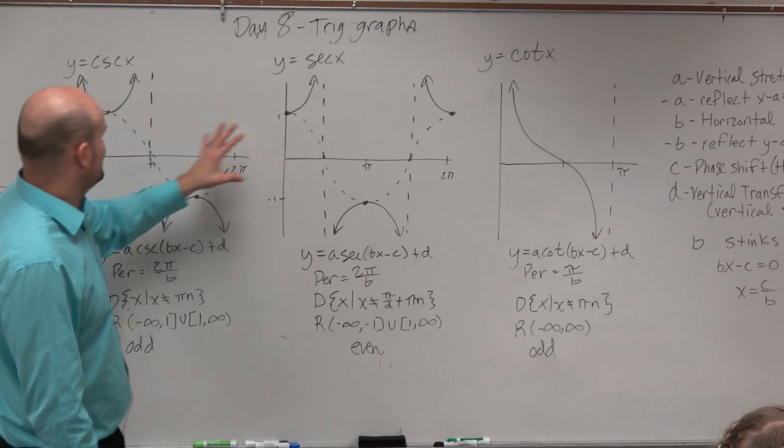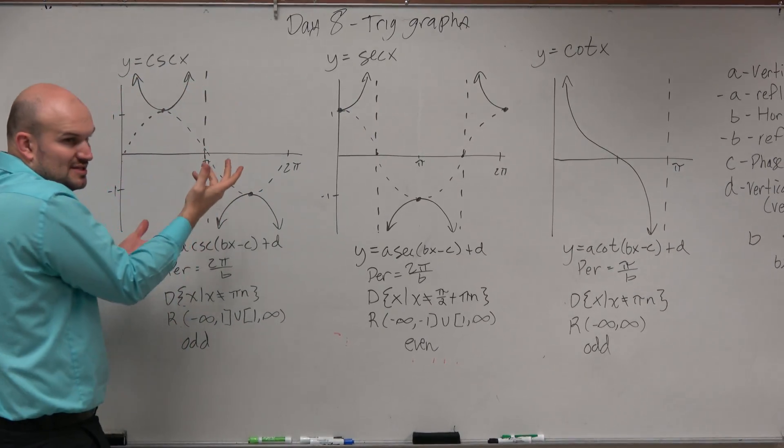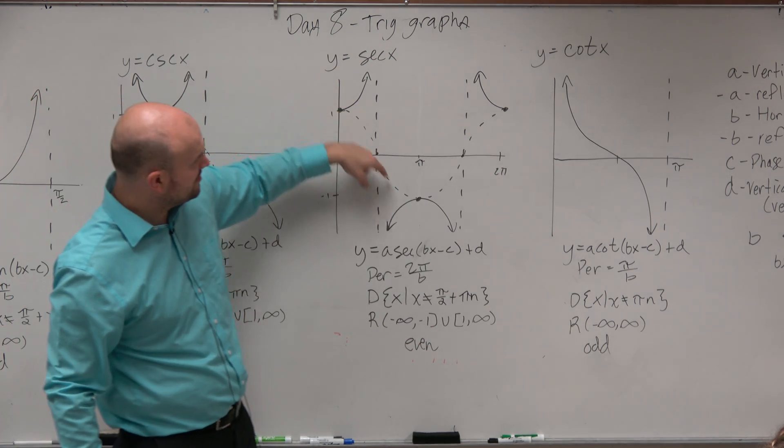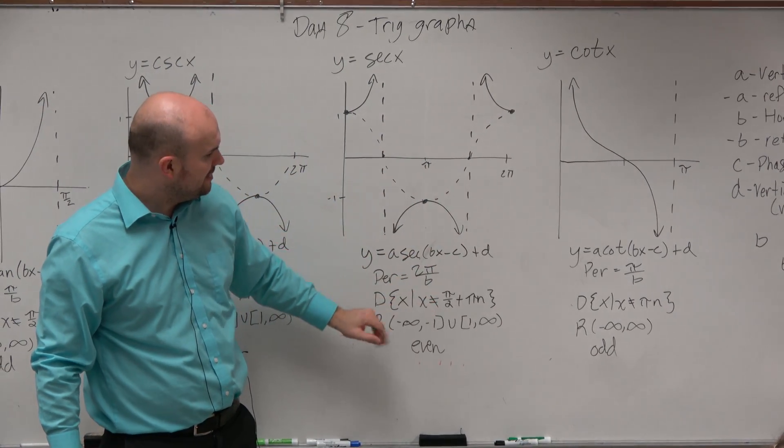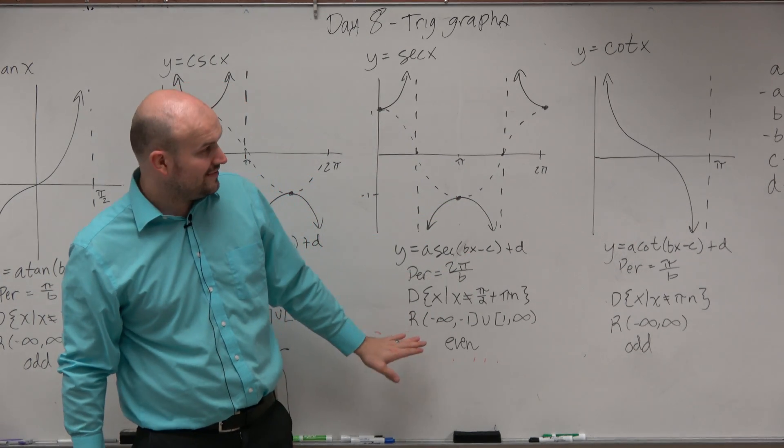Secant is really the exact same thing. And again, secant, if you just shifted secant over, you would have cosecant, right? So it's kind of like how sine and cosine are related. Secant and cosecant are related. This is just the reciprocal of the cosine function. Same thing applies. Everything is all the same. Obviously, the asymptotes are a little bit different. And then this one is even.